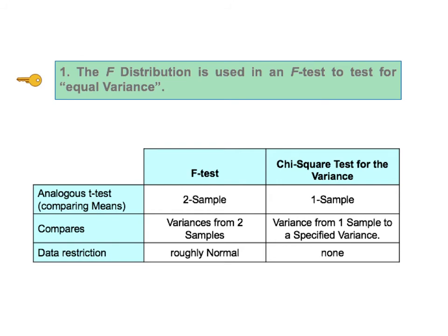In this table, let's first read down the column titled F test. If you're familiar with t-tests, the F test is analogous to the two-sample t-test, which compares the means from two samples. Because, as we said earlier, the F test compares samples taken from two different populations or processes.